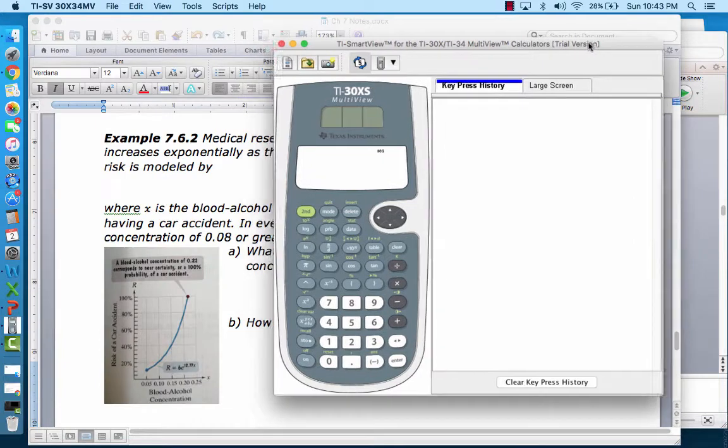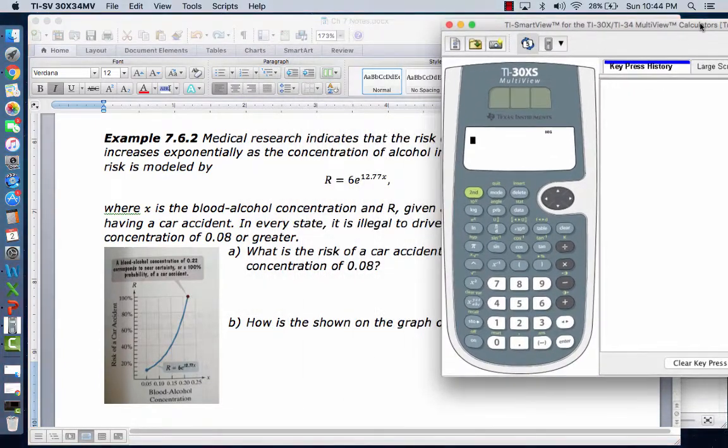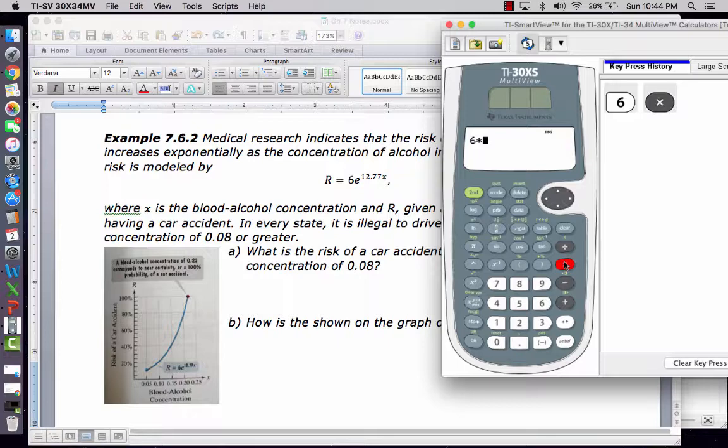We're going to type 6 times, and then we got to get this e, this is not a variable, this is a number. This is a constant number, it's called the exponential growth constant.